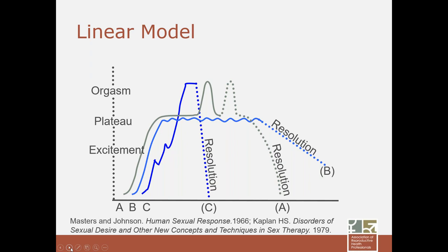There are a variety of ways that women can pass through the linear model — these could be three different women or the same woman in three different experiences. Pattern A shows rapid excitement, sustained plateau, orgasm, and resolution. Pattern C shows rapid excitement traveling quickly to orgasm with quick resolution — a model more associated with masturbation. Pattern B shows excitement and plateau with no orgasm, which is not necessarily dysfunctional as long as it is not what occurs every time.